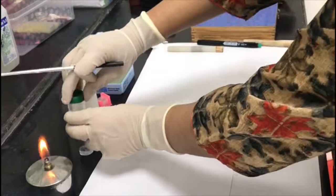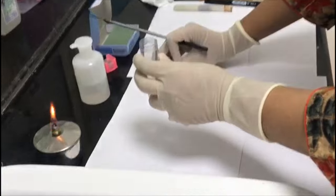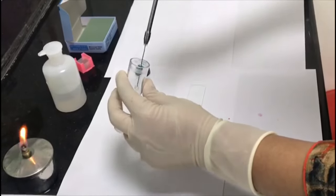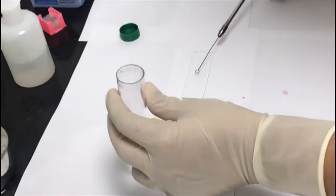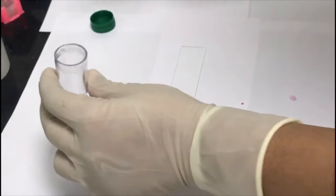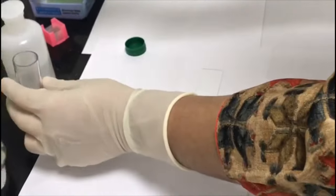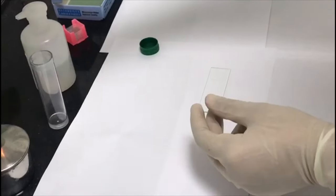Transfer a small quantity of specimen to be examined with the help of the wire loop onto the slide. Again sterilize the inoculating wire loop with the help of the burning flame.